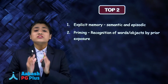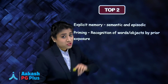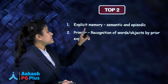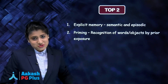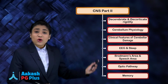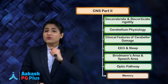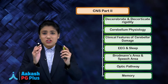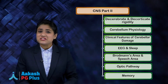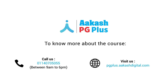The two most important things to remember: explicit memory is divided into semantic and episodic memory, and priming involves recognition of words or objects by prior exposure. This was all about Part 2 of the central nervous system. Don't forget to revise all these topics before your exam. Keep watching Physiology Paatshala by Akash PG+.